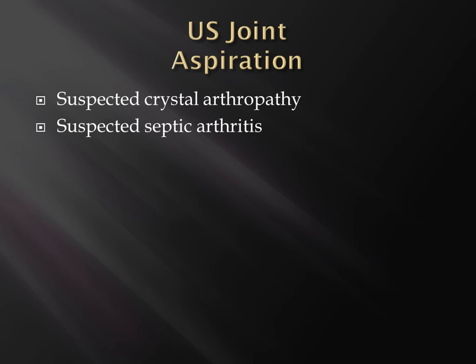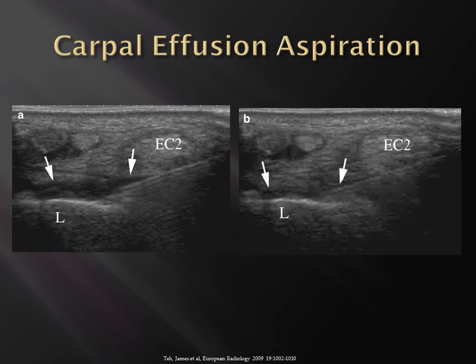Ultrasound-guided aspiration is usually indicated when you're suspicious for a crystalline arthropathy or for a septic arthritis, and it's joint-dependent — which compartment of the wrist or which joint is involved. This is an example of a carpal effusion aspiration, with the second extensor compartment labeled, going with the needle on longitudinal visualization deep to the extensor compartment to the dorsum of the wrist. The pre- and post-aspiration image shows that the fluid in the dorsal recess of the wrist has decreased and the capsule is less distended. With ultrasound guidance you can be creative — you're not limited to standard axial, sagittal, or coronal planes; most of the access we use is an off-axis, non-standard plane.